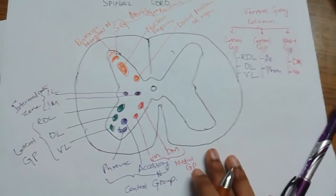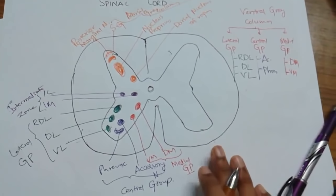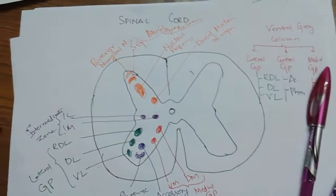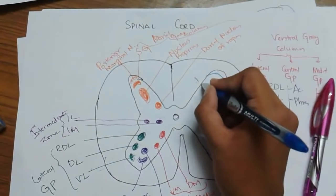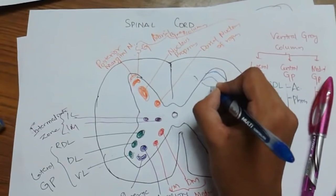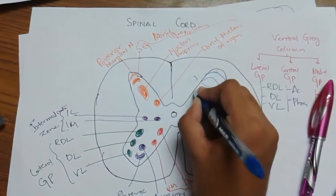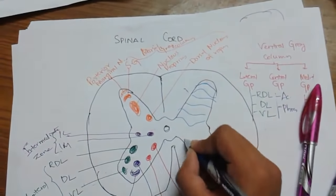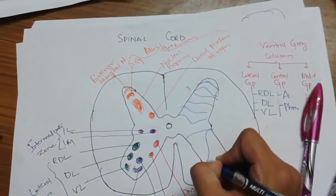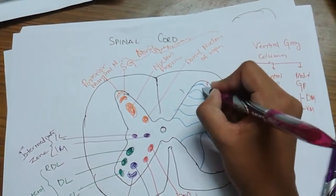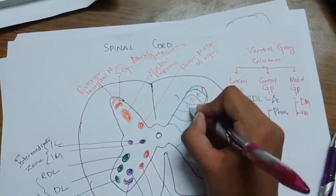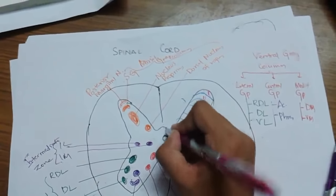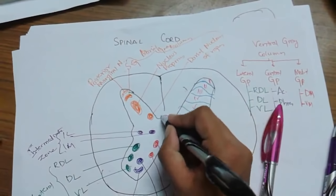These nuclei are also divided by the laminar way of classification. In the laminar classification there are laminae one through ten. Lamina one corresponds to the posterior marginal nucleus. Lamina two corresponds to substantia gelatinosa. Laminae three and four correspond to nucleus proprius. Lamina five corresponds to the neck of the gray column. Lamina six corresponds to the base.